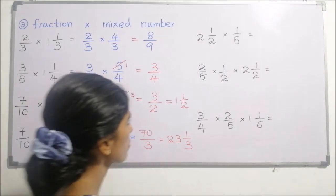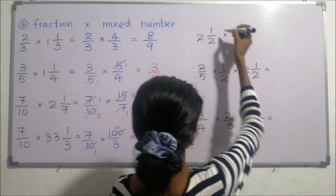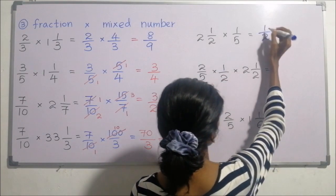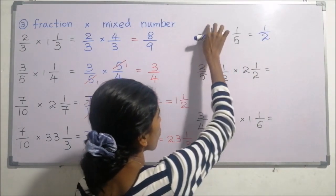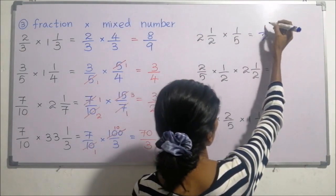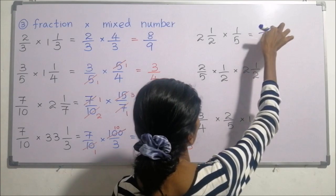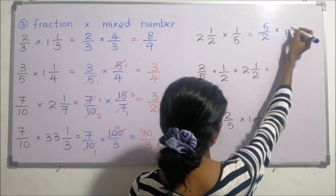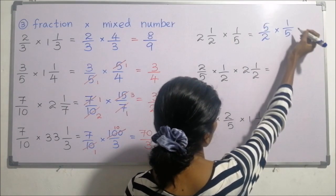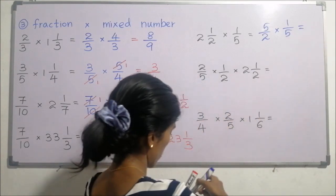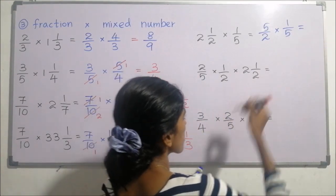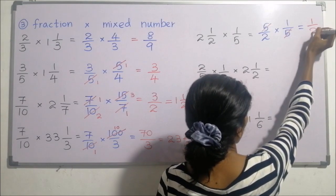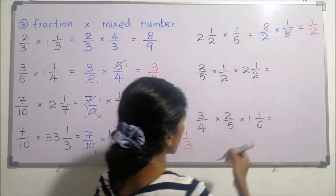Next: convert the mixed number — same denominator, two times two is four, plus one is five — five over two. Multiplied by one over five: two and five can be simplified, giving a final answer of one half.